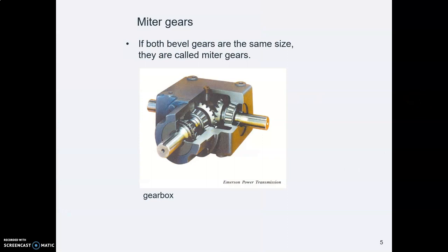Sometimes you just need gears to change direction, to go around a corner, and you're not changing speed. And if you're doing that, those are called miter gears. Not that we need to remember that necessarily.